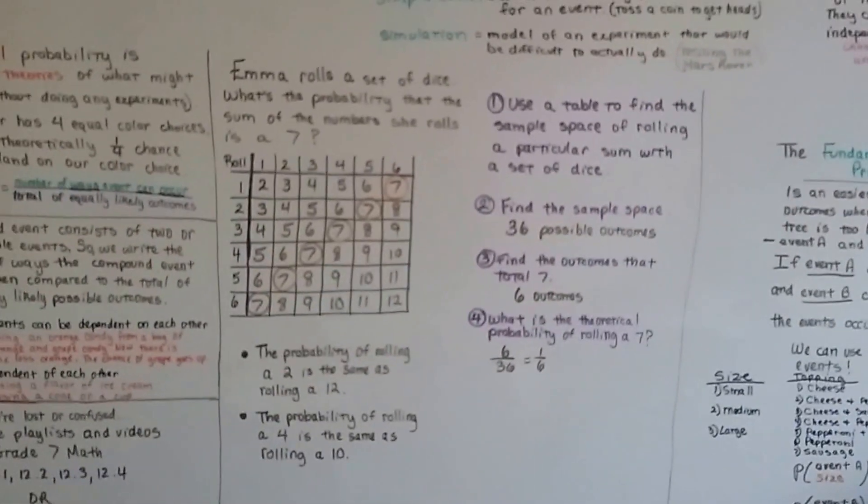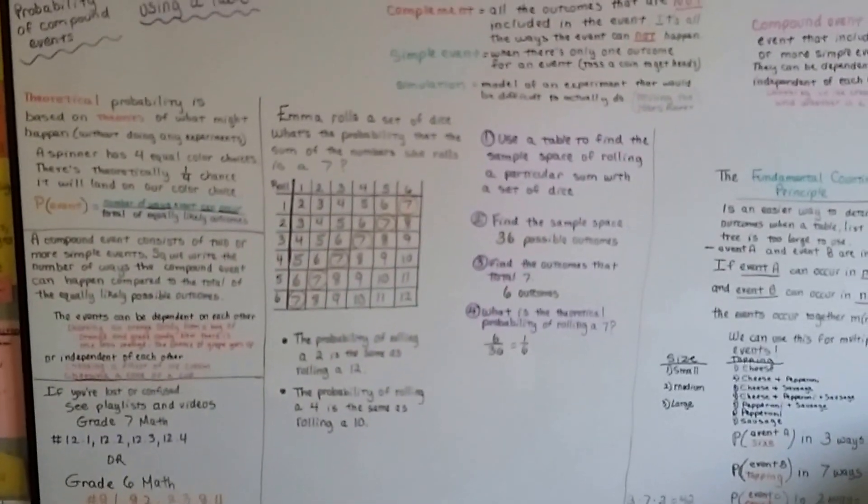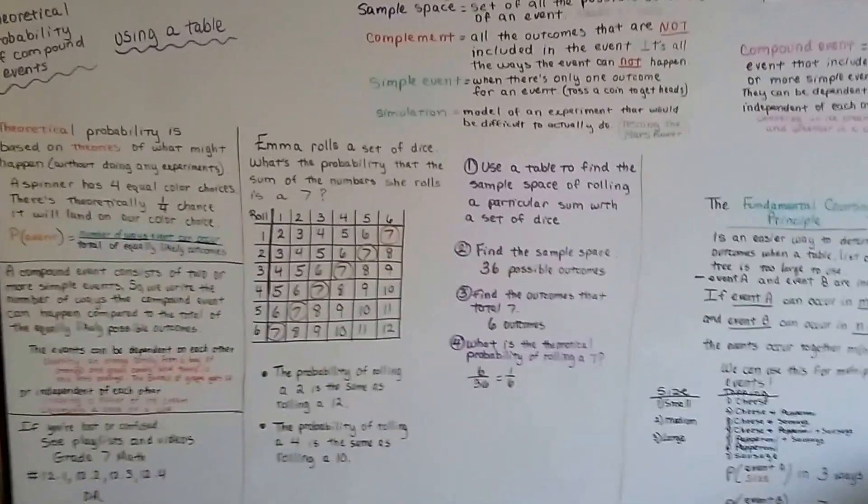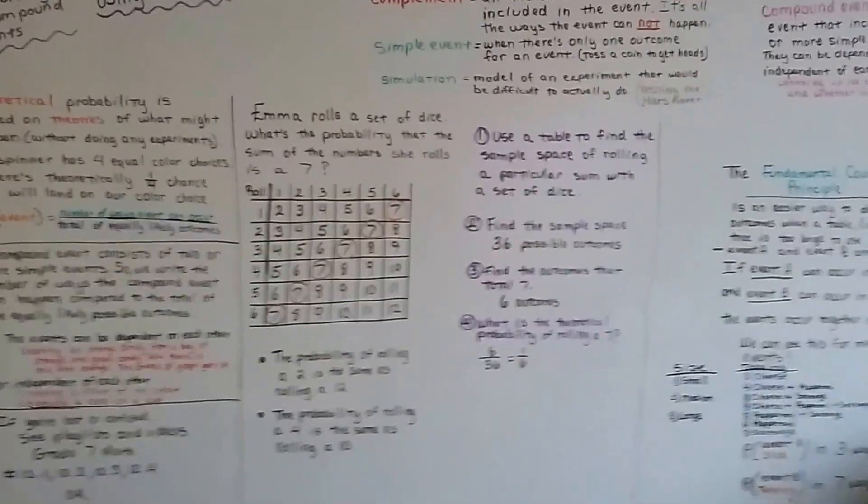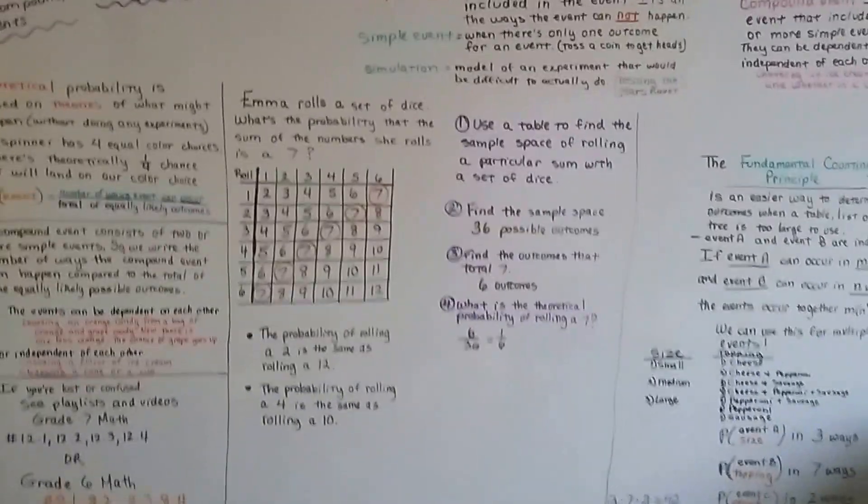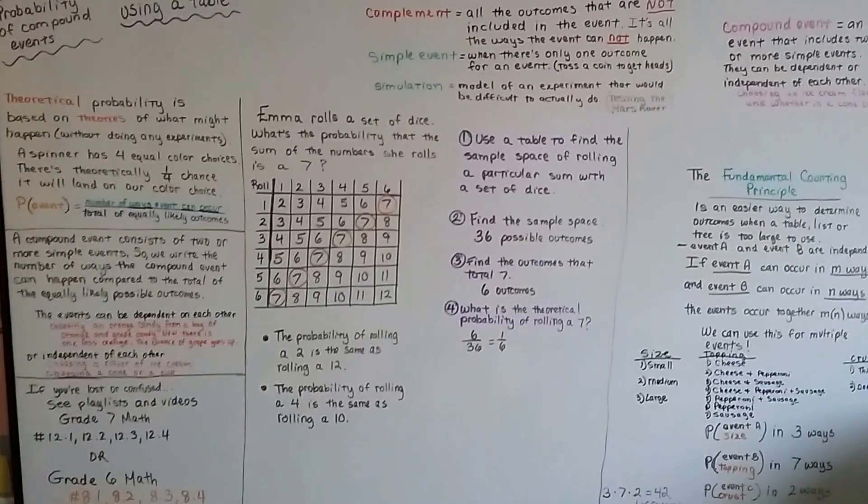So that's using a table for theoretical probability of compound events. Does that make sense? And we're going to make a tree next, a tree diagram, and we'll see how that works for this. I hope this was helpful. I'll see you next video. Bye.